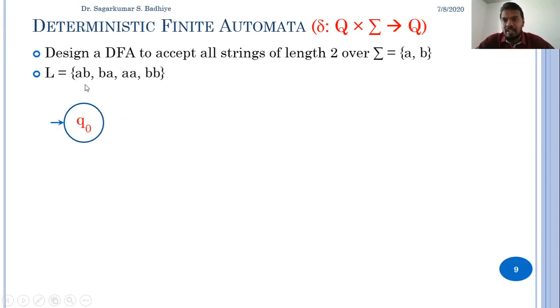Whenever in q0 I get input a, I will transit to a new state q1. From q1, whenever I get symbol b as input I will go to another state, and this state should be a final state because I need to accept this particular string ab. So this will be the final state.